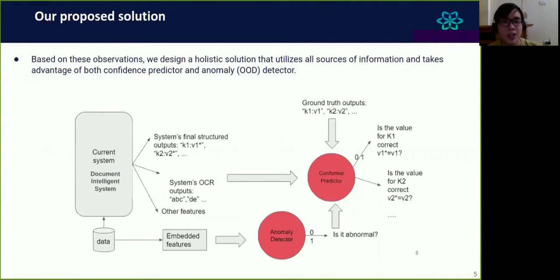Based on this observation, we design a holistic solution that utilizes all sources of information and takes advantage of both confidence predictor and anomaly detector methods. We come up with an overall architecture here that consists of two main components, conformal predictor and anomaly detector. Given the current DIS system, we can extract different kinds of information or features from the system. For example, the final structured output, the OCR output, or any kind of hidden feature from information extraction networks.